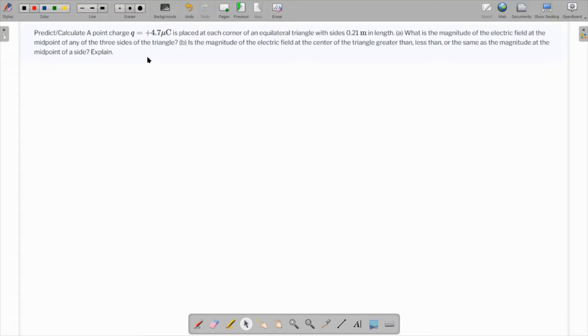In this question, a point charge Q of 4.7 µC is placed at each of the corners of an equilateral triangle and its length is given as 0.21m. So that's how it's going to look like. This is Q, this is Q and this is also Q.